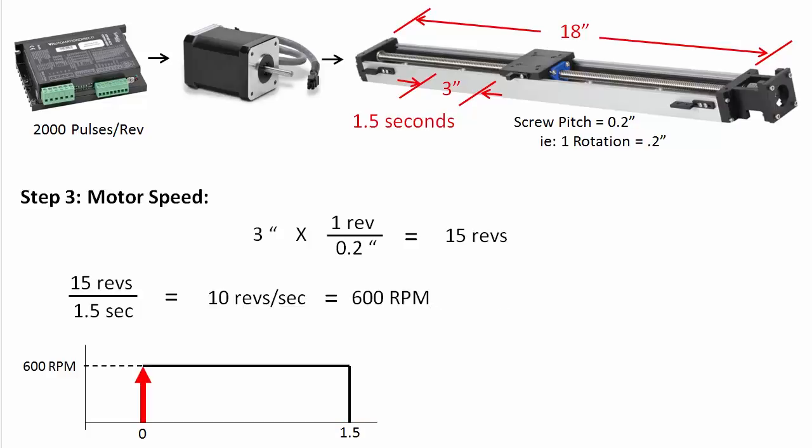No, they typically accelerate to speed and decelerate back down. And because it takes time to speed up and time to slow down, the peak speed needs to be greater to make up for that lost time so it can still get the carriage where it needs to be in 1.5 seconds. How much greater does the speed need to be during this time?